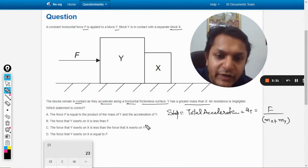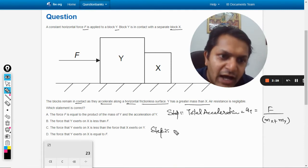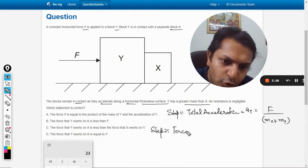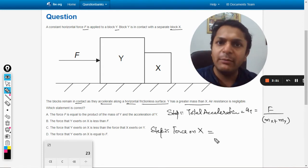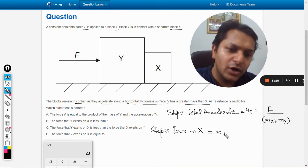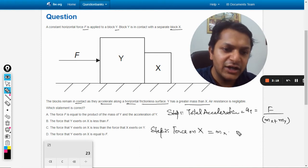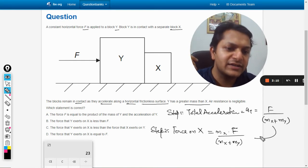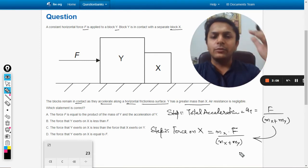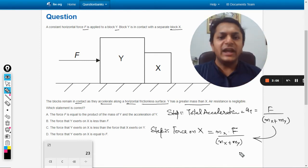Let us go for step number two and find what is the force on body X. So F equals m into a, so mass of the body X into a. And the acceleration is this, so acceleration we have taken from step one only because individually also the mass X is moving with the acceleration a_t. So the force on X is this.